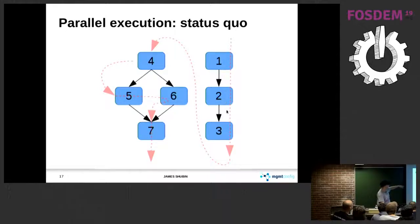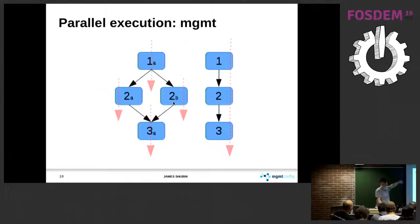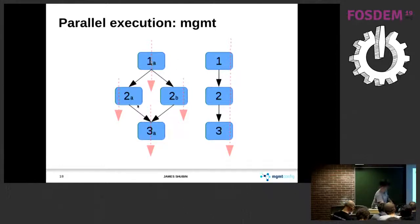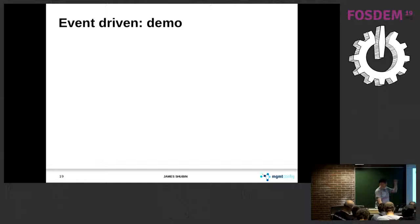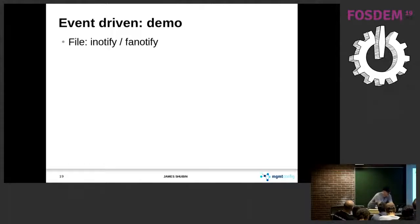In MGMT, instead of wasting time the way most other tools do, we actually parallelize this. Everything on the left can be run at the same time as everything on the right. Once 1A is done, we can do those two resources simultaneously, and so on. That's useful if we're working on really big complex systems. Each of those blue boxes — those resources — are actually event-driven.